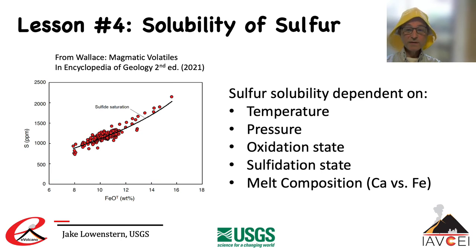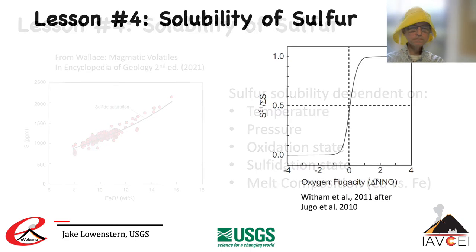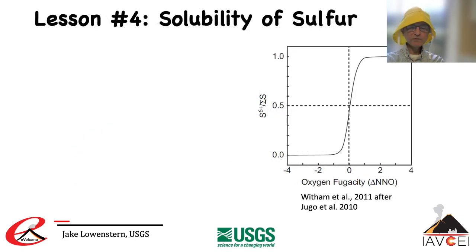In the plot on the left, in pyrrhotite-saturated basalts, the solubility of sulfur is a function of iron oxide concentration in the melt, because ferrous iron tends to bond with sulfur within the melt and is the primary sink for sulfur in the exsolving sulfide phase. Many studies have demonstrated profound effects of temperature, pressure, oxidation state, sulfidation state, and melt composition on sulfur concentration in sulfide- and sulfate-saturated magmas. The ratio of sulfate to total sulfur is greatly dependent on oxygen fugacity. Despite these complexities, software programs still often parameterize the partitioning of sulfur between the melt and a coexisting vapor phase, sort of like it was a noble gas with a fixed K.